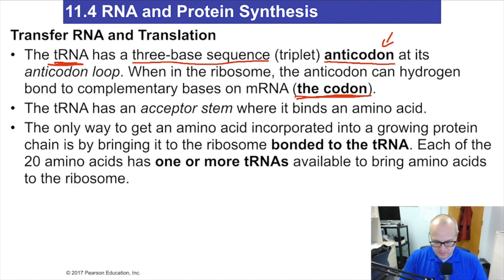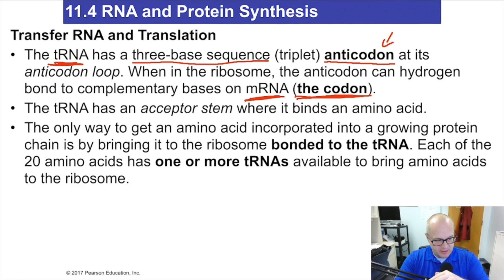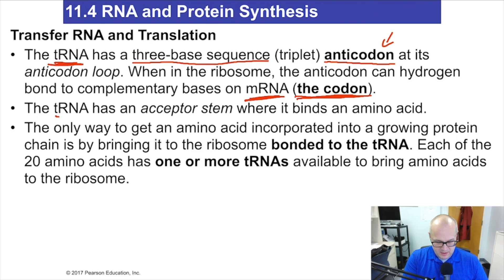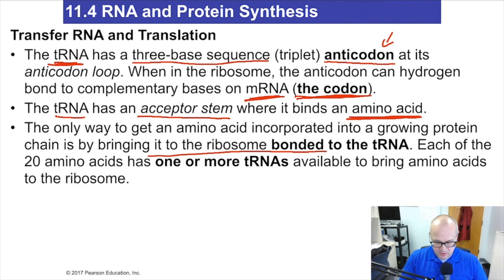The codon is the complementary portion of mRNA. Remember, mRNA is in the ribosome waiting to be translated — a three-base sequence in mRNA is called a codon. The tRNA will bring the anticodon and bind to the codon through hydrogen bonding — it's always through hydrogen bonding. The tRNA is going to have an amino acid attached to it; tRNA has what's called an acceptor stem, and that's where the amino acids bind.